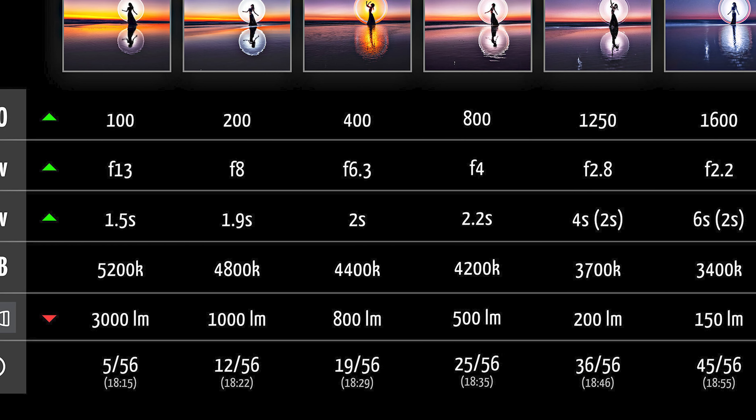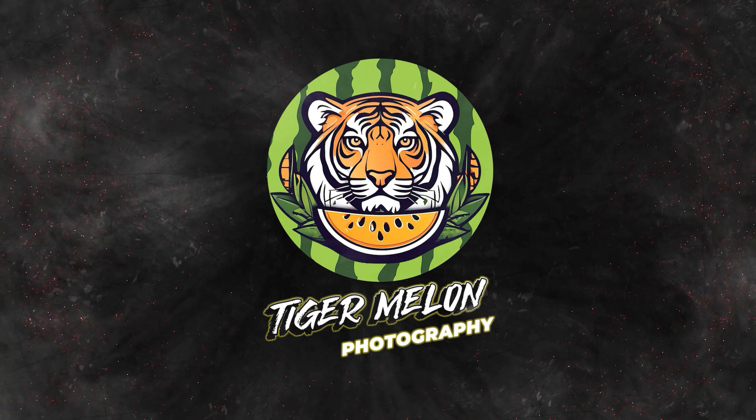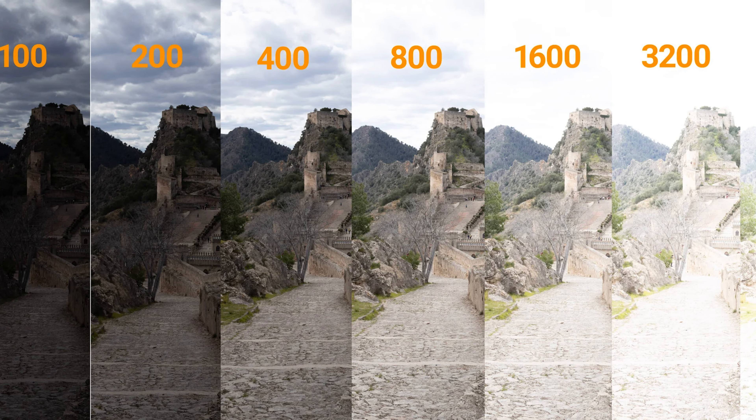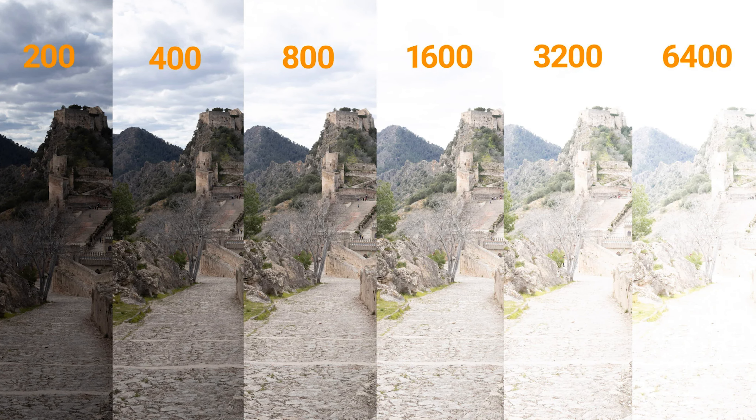By mastering the use of your ISO you can really leverage the rest of your camera settings to get the best light in your photos. So first things first, let's answer the question: what is ISO and how do we use it? Simply put, the ISO is a setting that controls the sensitivity on your camera's sensor. The lower your ISO setting, it decreases the amount of light your camera picks up. The higher the ISO setting, it increases the amount of light your camera picks up.